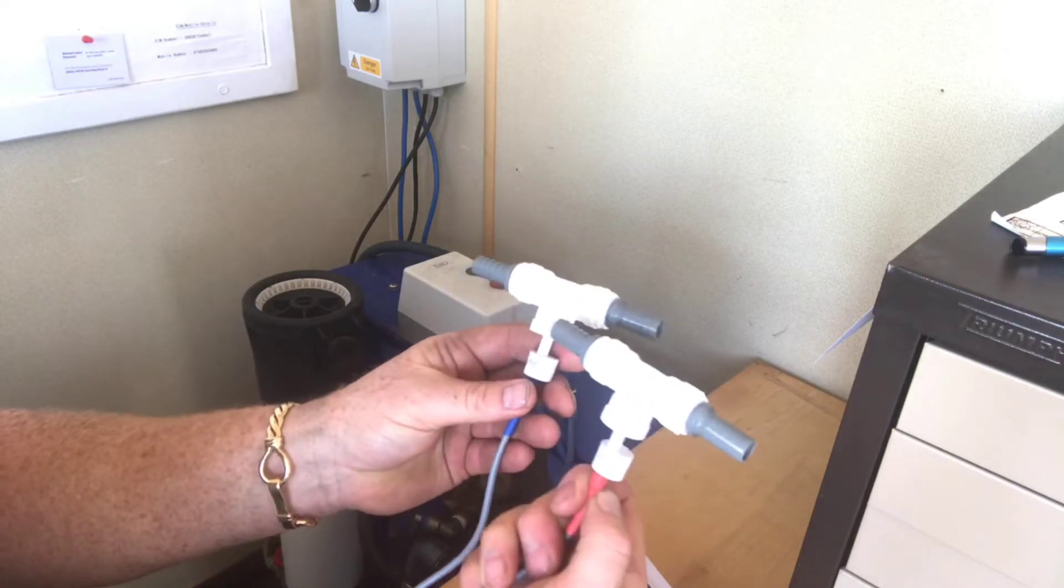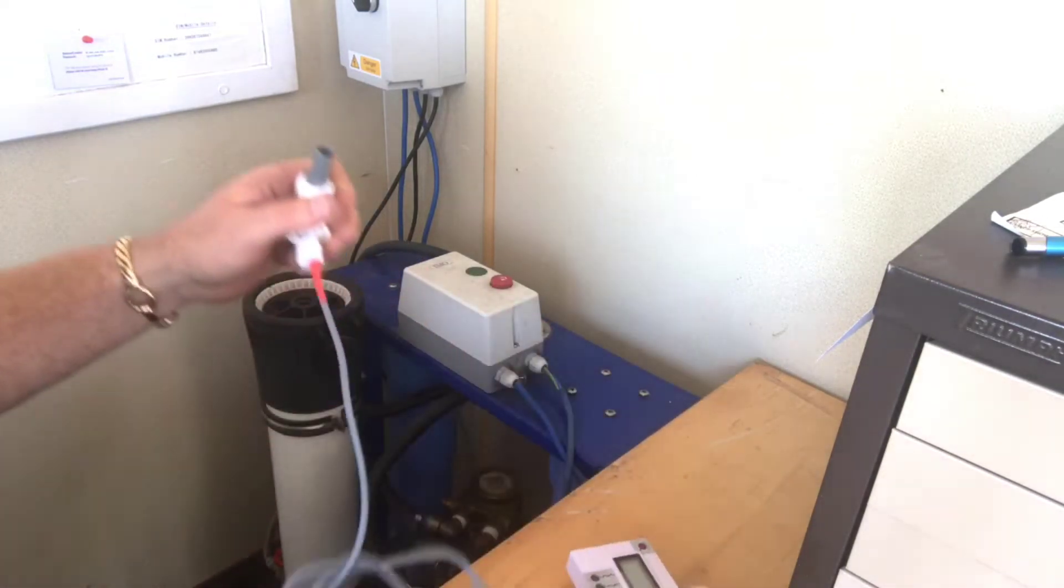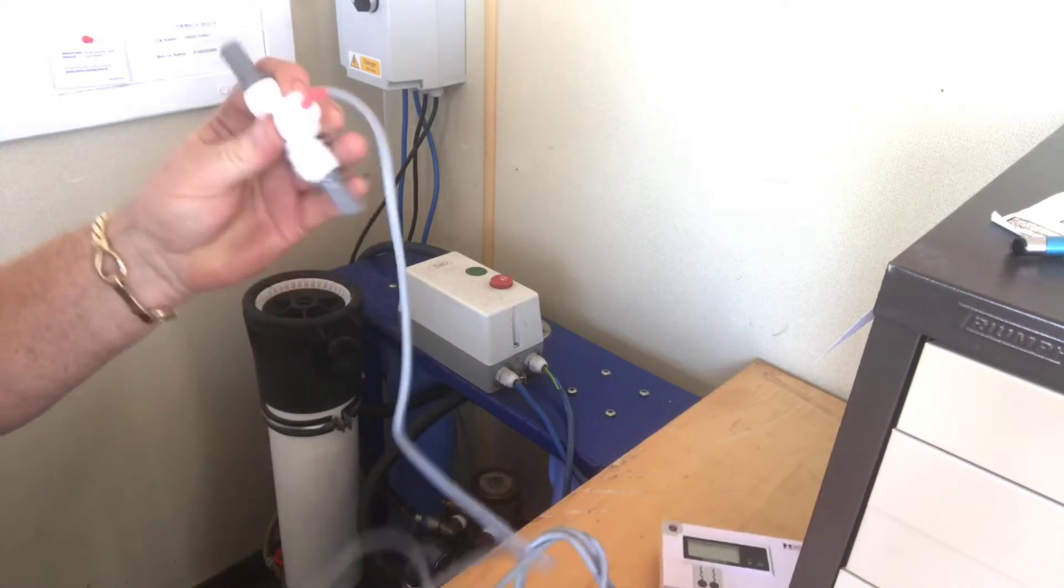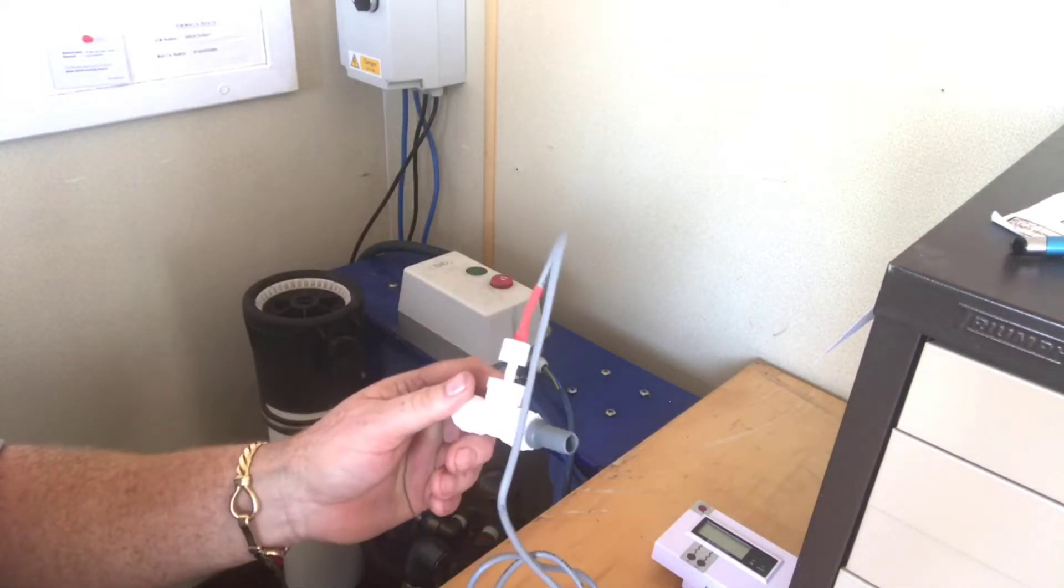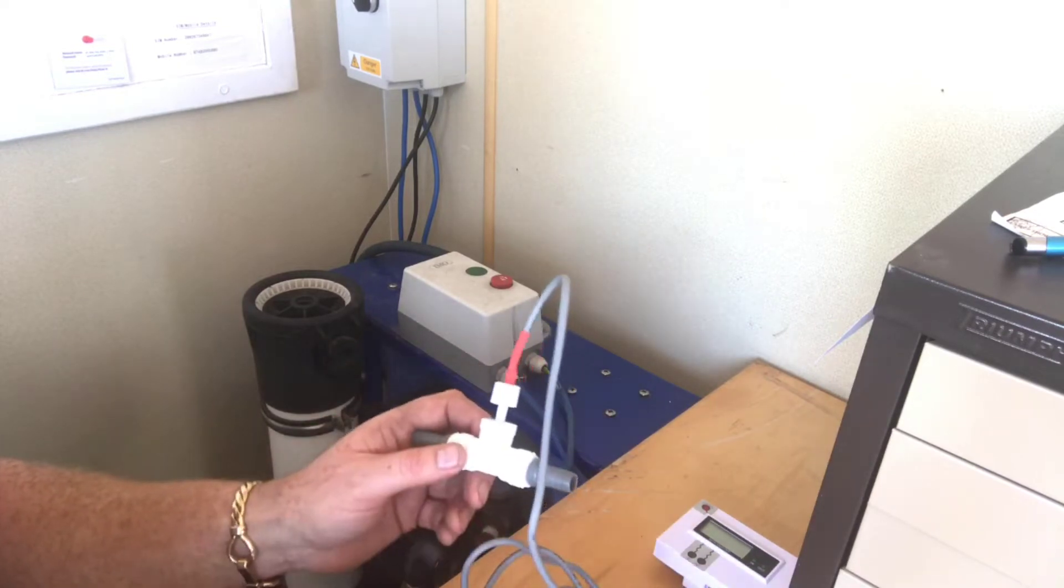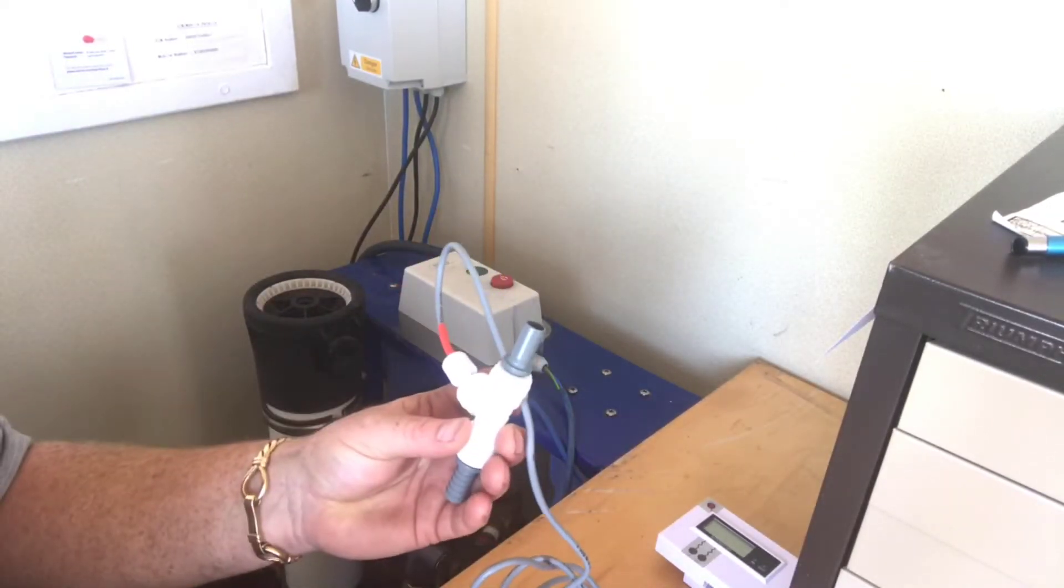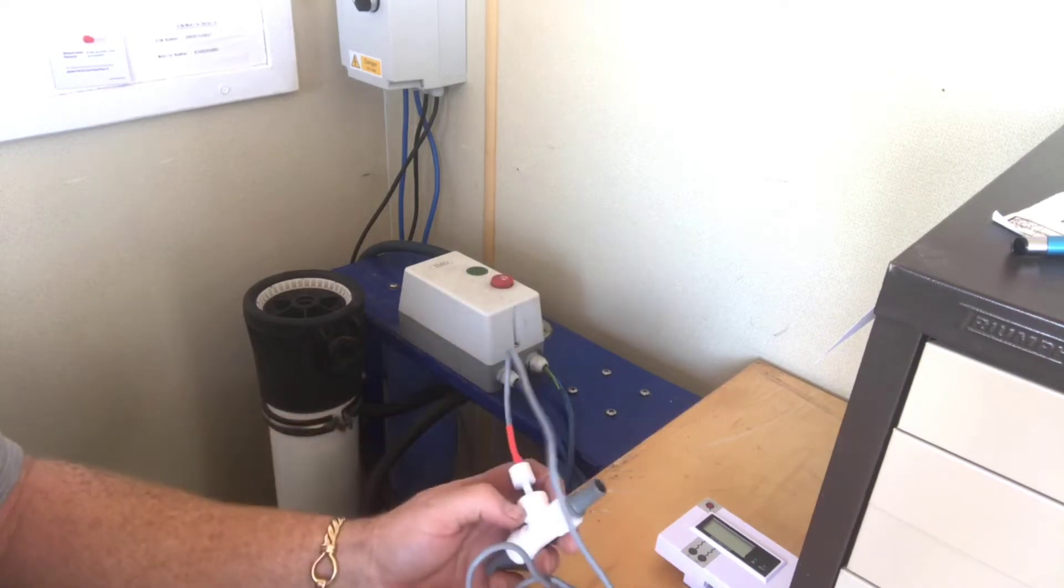And if you see, one's got in and one's got out. What actually happens is the in goes just after the 4040 or 4020, whichever you've got, just before the DI, right? So you can see what the water is before it goes to the DI.